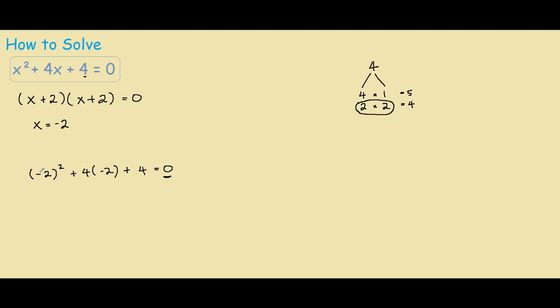So we have negative 2 squared is 4, 4 times negative 2 is negative 8, plus 4. So as you can see, 4 plus 4 is 8, minus 8 is 0, therefore negative 2 is the solution.